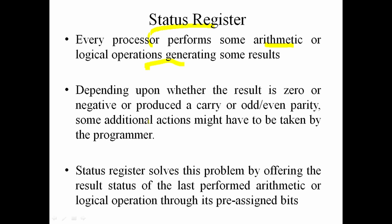For example, when we perform a subtraction or multiplication and the result is zero, that is indicated in the status register. The result of the operation is reflected through the status register flags.